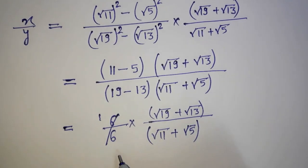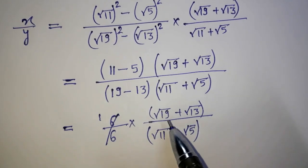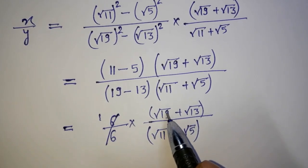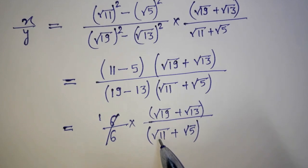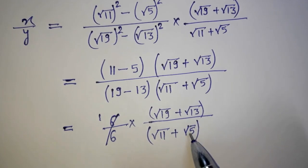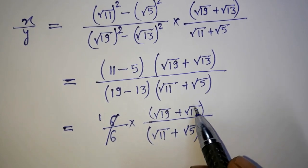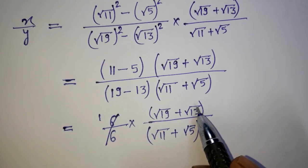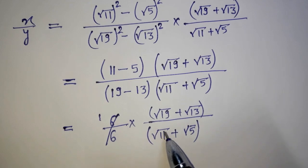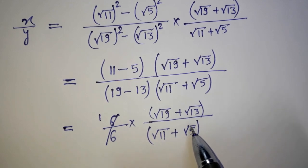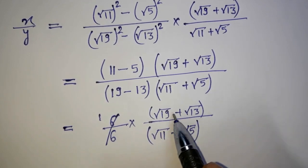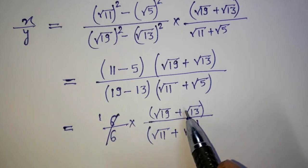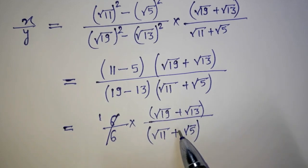Now we have to think which one is greater. Obviously root 19 is greater than root 11 as well as root 5, and root 13 is also greater than root 11 and root 5. So the sum of these numbers will obviously be greater than the other.